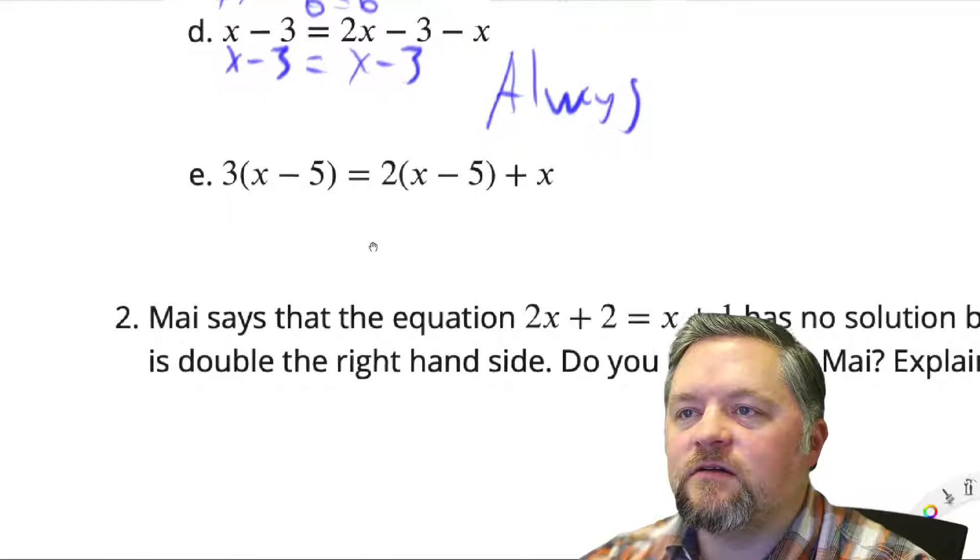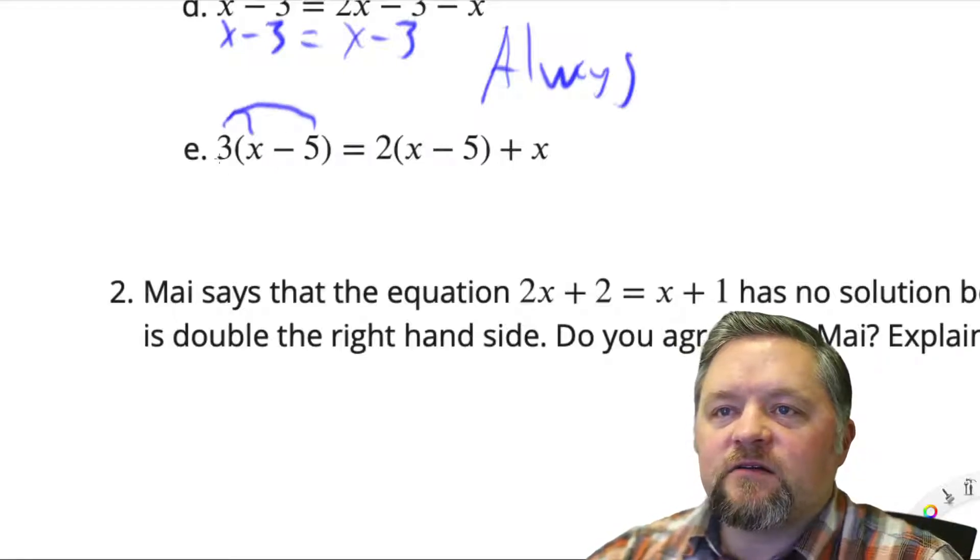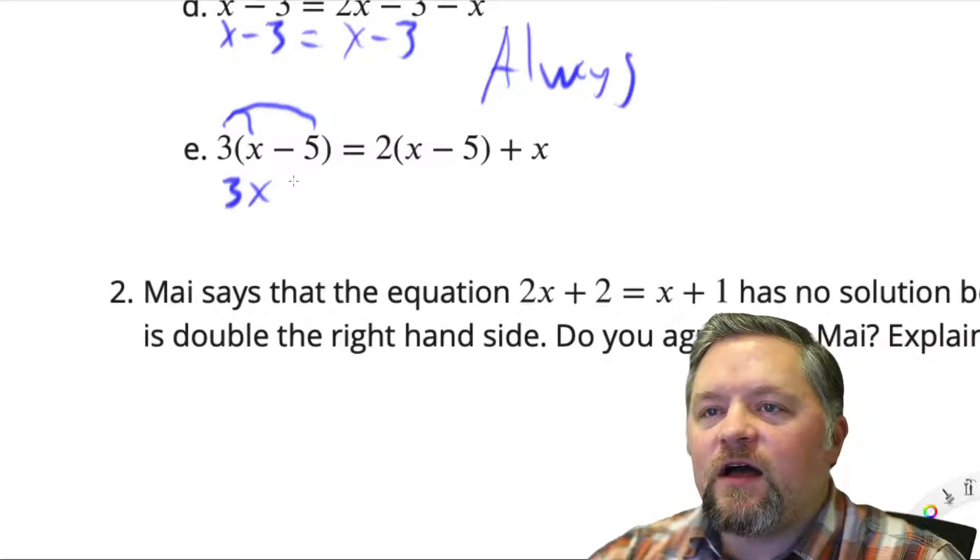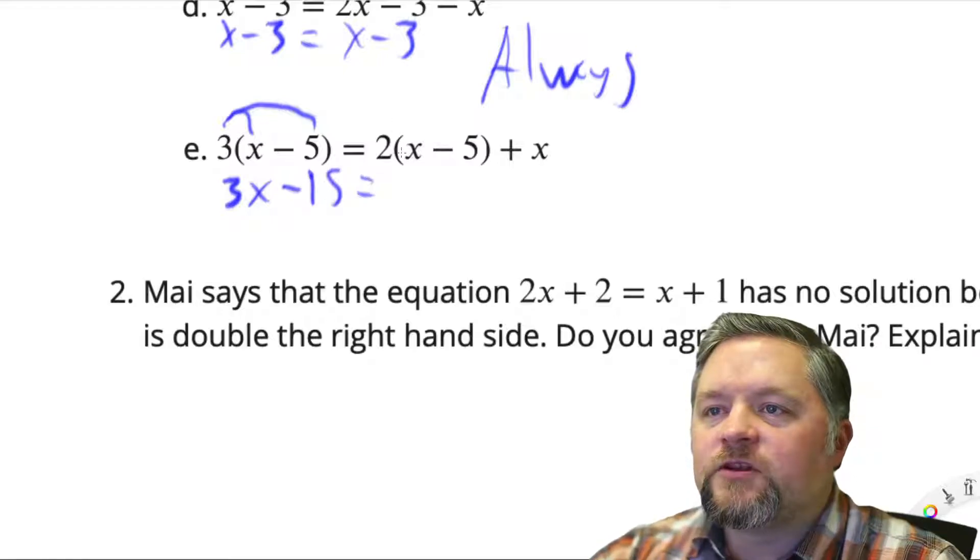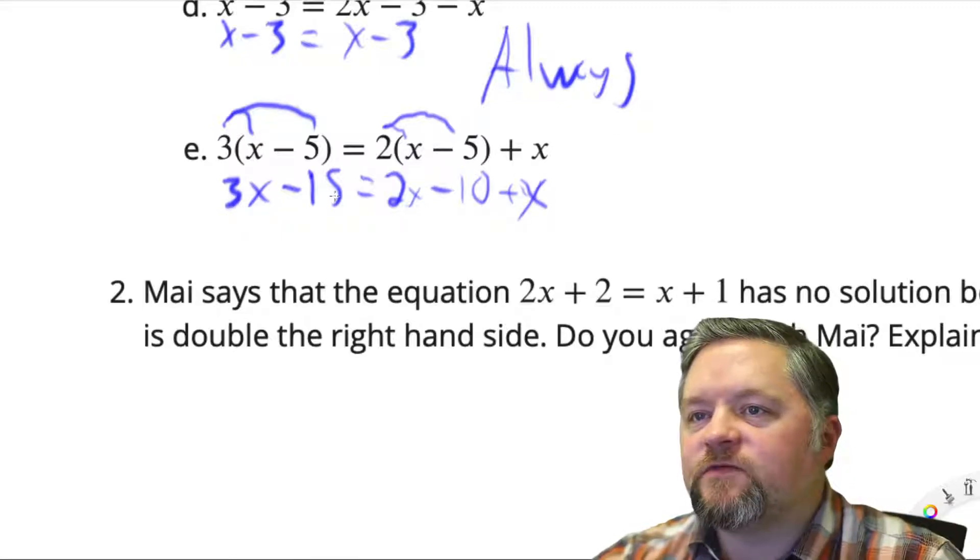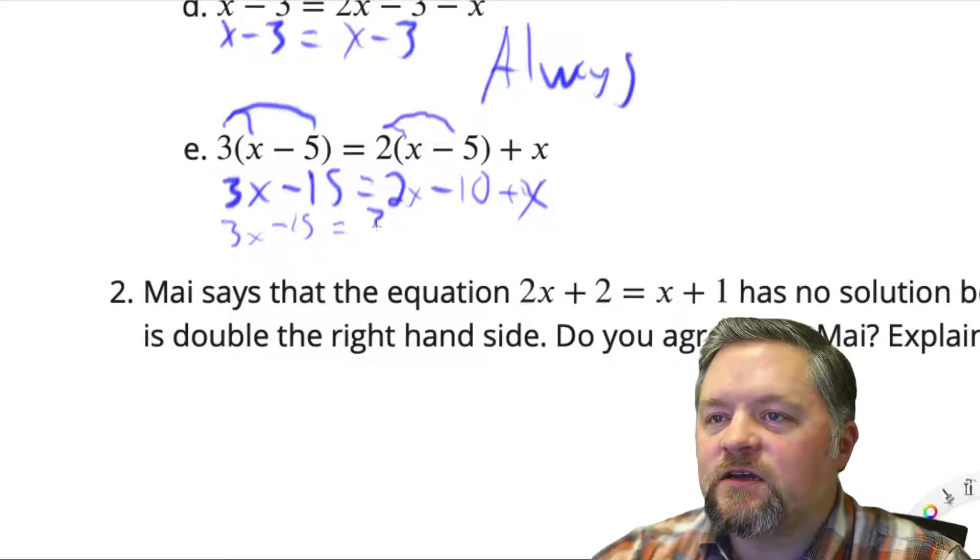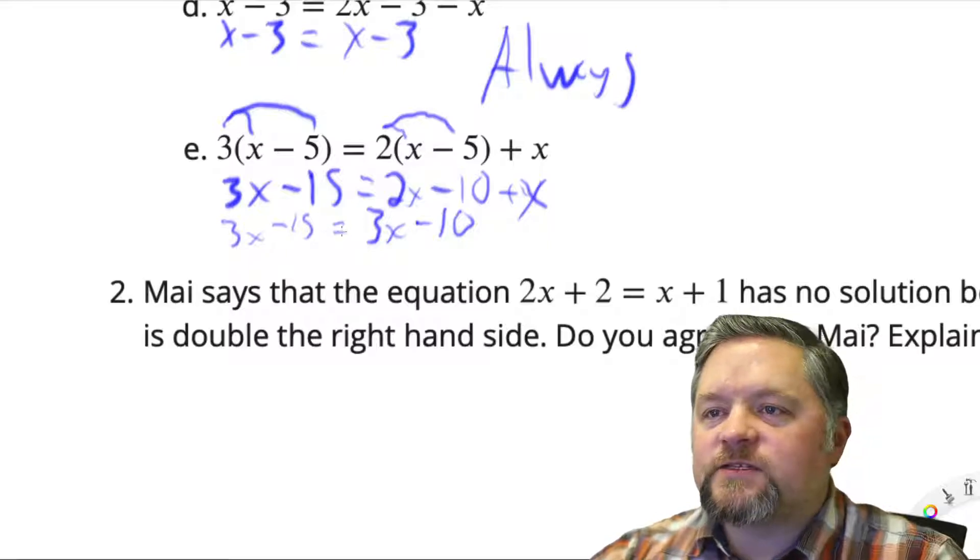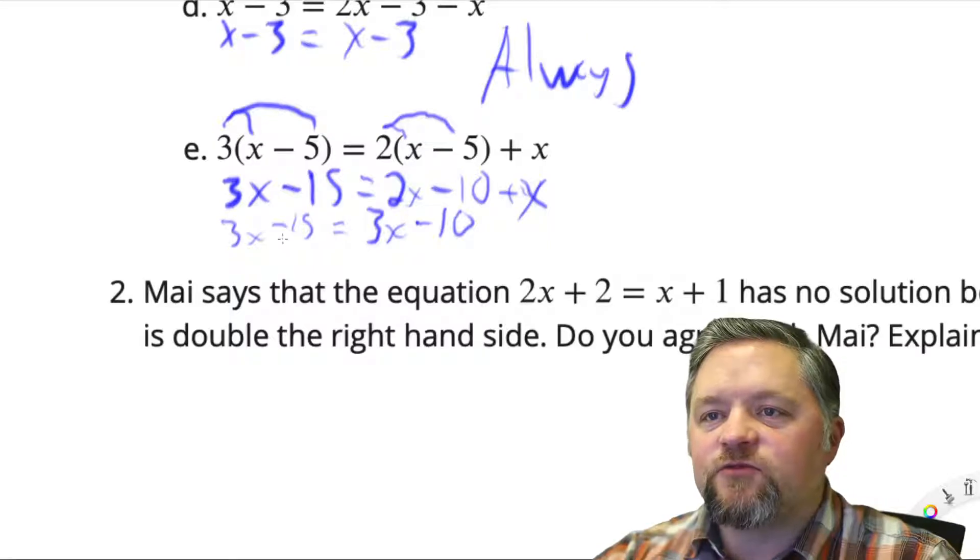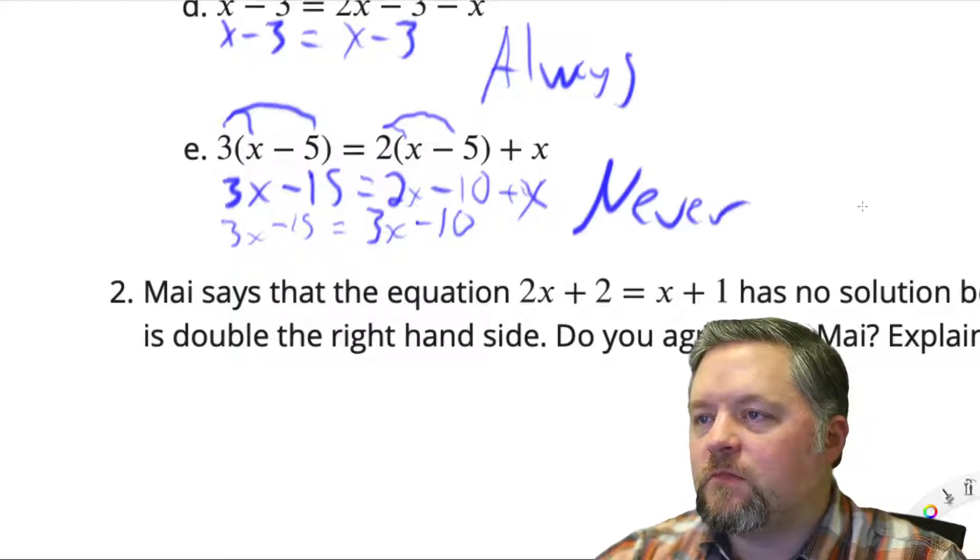Now for our next one, we have 3 times x minus 5. Let's distribute this. 3 times x is 3x, 3 times negative 5 is negative 15. On the other side, 2 times x is 2x, 2 times negative 5 is negative 10 plus x. We can simplify the right side. 2x plus x is 3x subtract 10. We have 3x minus 15 equals 3x minus 10. Is there a number that we can subtract 15 from or subtract 10 from and get the same number? No, there isn't. That's never true either.